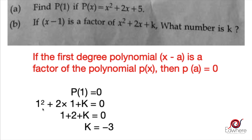So we get 1 plus 2 plus k equals 0, that is 3 plus k equals 0. Therefore k equals minus 3.